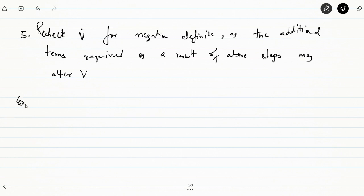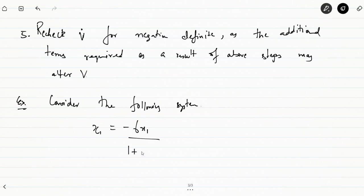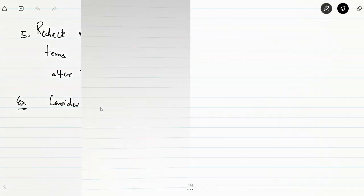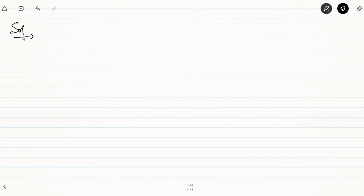Let's take an example. Consider the following system: x1̇ equals minus 6x1 divided by (1 + x1²)² plus 2x2, and x2̇ equals minus 2x1 minus 2x2 divided by (1 + x1²)². We need to determine the stability of the equilibrium point of this system.